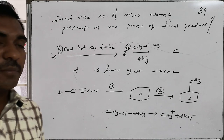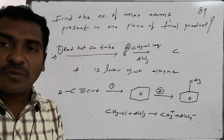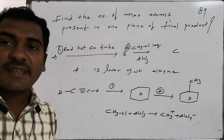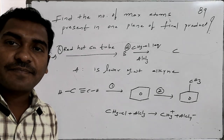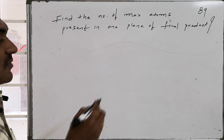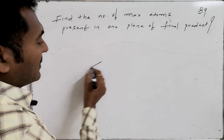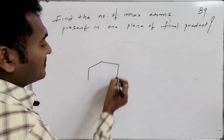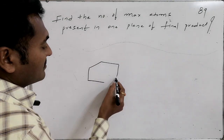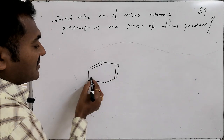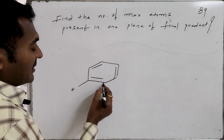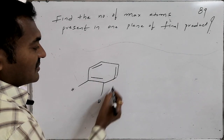Drawing the full structural representation of methylbenzene: it appears as a benzene ring, and writing one of the Lewis structures, it is associated with its hydrogens.